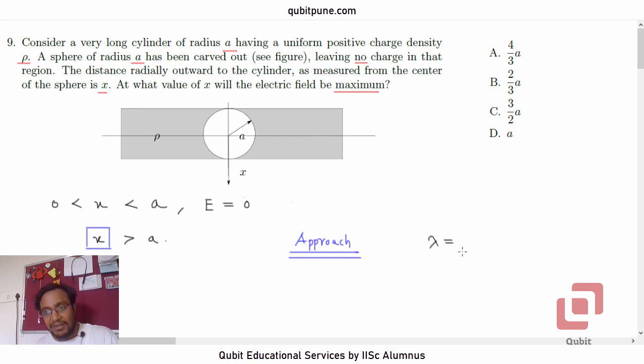The expression for the line charge density can be very easily obtained because we know the value of volume charge density, that is rho. Linear charge density is charge per unit length.